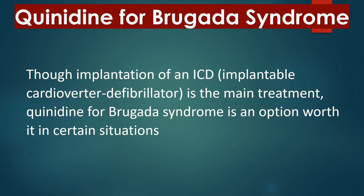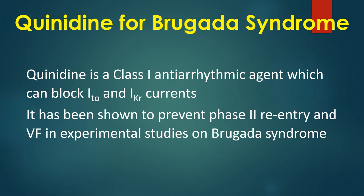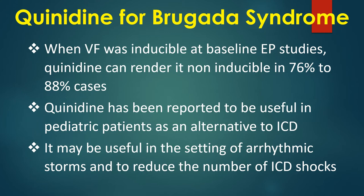Coved ST segment elevation of 2 mm or more with negative T wave in right precordial leads V1 and V2, either spontaneously or after challenge with a sodium channel blocker drug, is the characteristic ECG finding in Brugada syndrome. Quinidine is a class 1A antiarrhythmic agent which can block transient outward and rapid component of delayed rectifier potassium currents. It has been shown to prevent phase 2 reentry and ventricular fibrillation in experimental studies on Brugada syndrome. When VF was inducible at baseline electrophysiology studies, quinidine can render it non-inducible in 76 to 88% of cases.